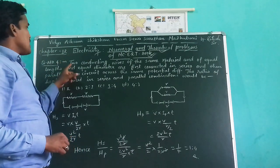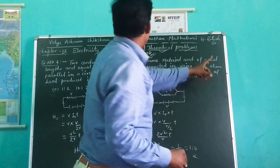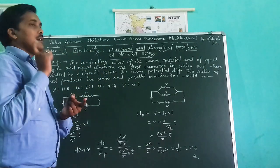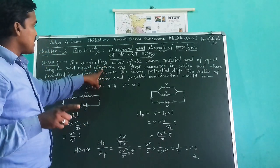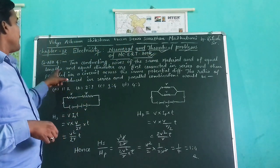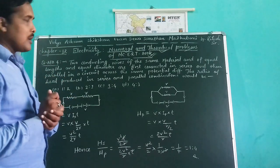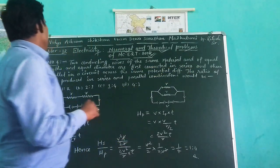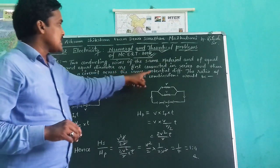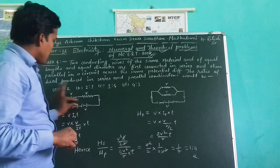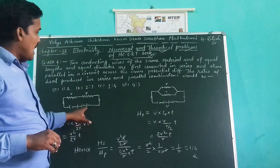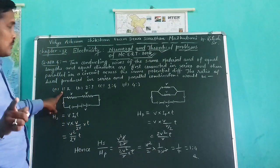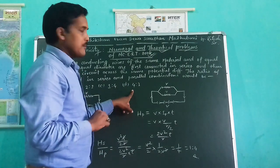Question number 4. The question says that two conducting wires of same material and of equal length and equal diameter. Means the question is hinting you that the resistivity of the material, due to the equal diameter, same diameter, same nature of the material and of equal length, the resistivity and resistance both are equal. First connected in series and then in parallel in a circuit across the same potential, means the potential of the source that is being introduced here are equal in both cases. The ratio of the heat produced in series and parallel combination would be - here are the options: 1:2, 2:1, 1:4 or 4:1.